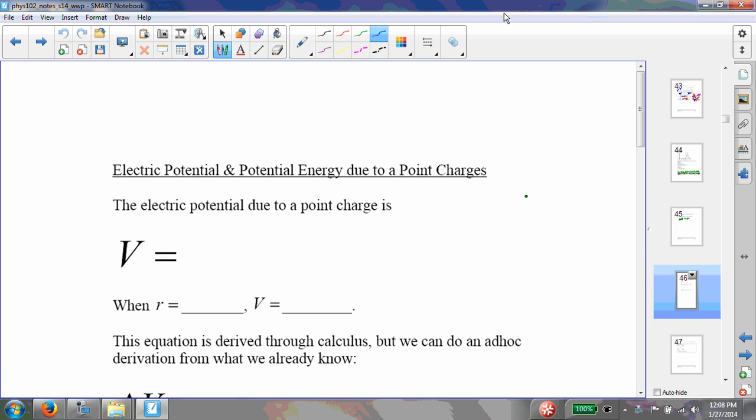So first of all, the electric potential due to a point charge is given as KQ over R, where when R equals infinity, then V is equal to zero.